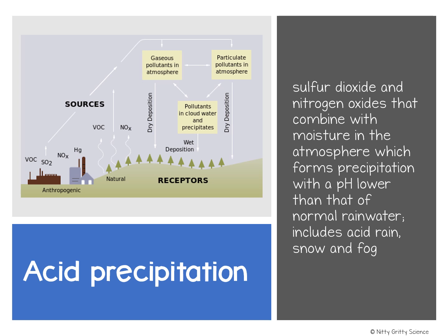Acid precipitation, also known as acid rain, is when sulfur dioxide and nitrogen oxide combine with moisture in the atmosphere and it results in a pH lower than that of normal rainwater. This can negatively affect the chemistry of water in lakes and rivers and can harm the organisms in the water.